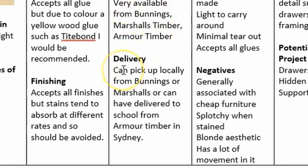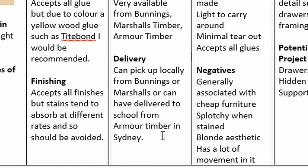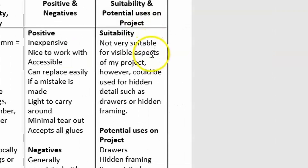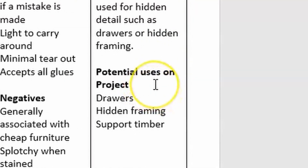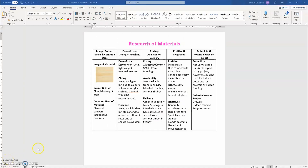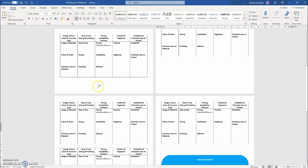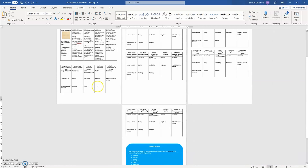For delivery, note whether you can get the material locally or whether you'd need to order it from another area — because ordering from elsewhere impacts whether you'd use that material. Positives and negatives are generally straightforward. For suitability, explain whether the material is suitable for your project and why. Potential uses asks where you could use it on your project. After completing your table, copy and paste it another six times so you end up with a table for each material researched.